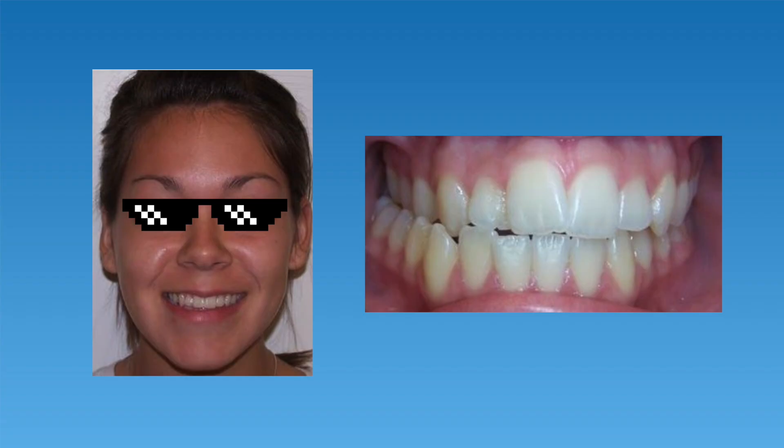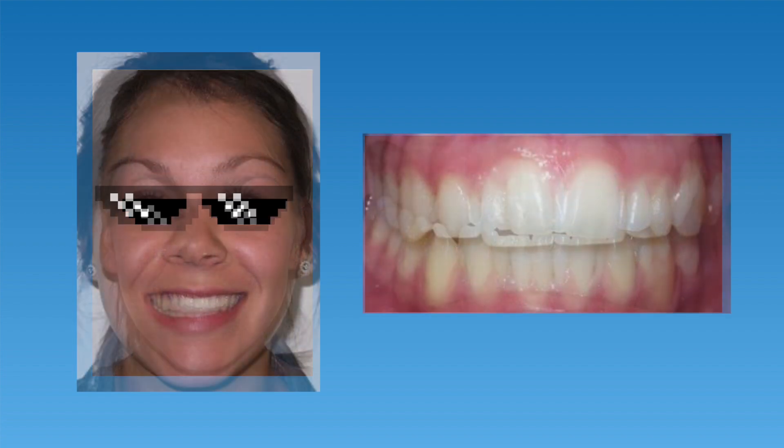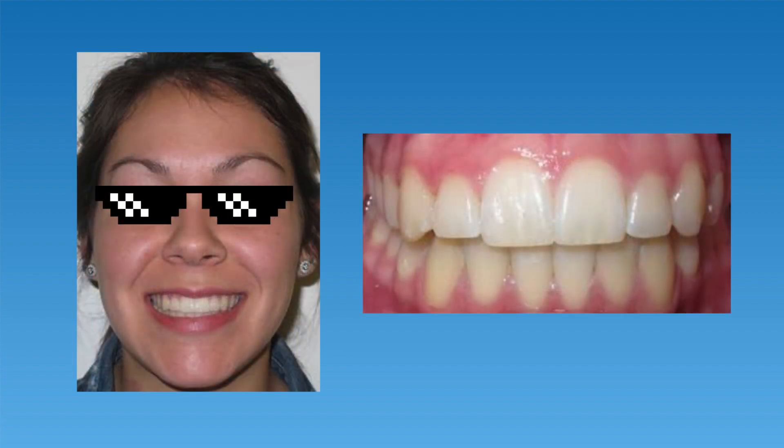We actually have a separate video all about quad helix expanders — if you'd like to check it out, we'll link to it in the description below. The patient discussed earlier received a combination of braces and a quad helix expander, and you can see from her before and after photos that she was able to get full correction of her posterior crossbite by expanding the upper teeth.